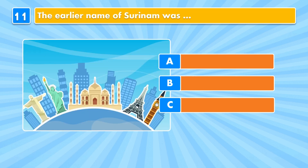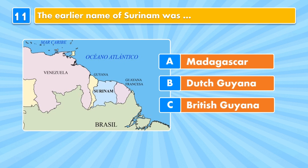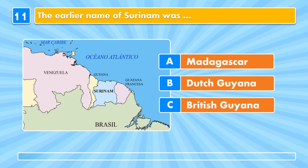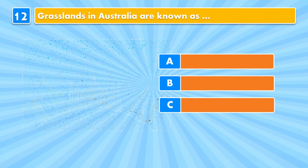Question eleven: the earlier name of Suriname was Madagascar, Dutch Guiana, or British Guiana? Answer: Dutch Guiana.